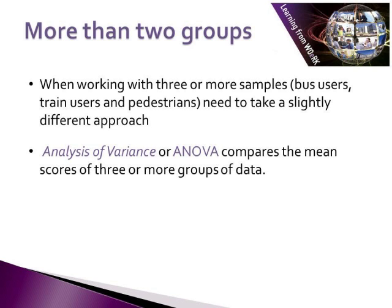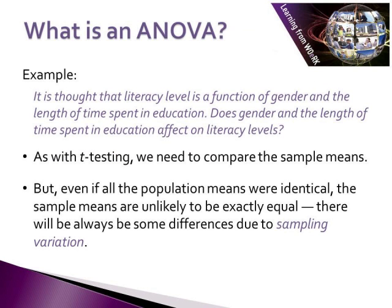ANOVAs are often used in scientific or medical experiments when treatments, processes, materials or products are being compared. For example, it's thought that literacy levels are a function of gender and the length of time spent in education. Does gender and length of time in education affect literacy levels? As with t-testing, we need to compare sample means, and in this case we are dealing with three different groups: literacy level, gender, and length of time spent in education. Therefore we're going to use an ANOVA.